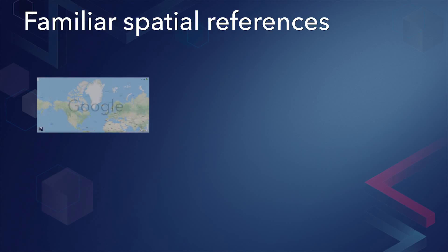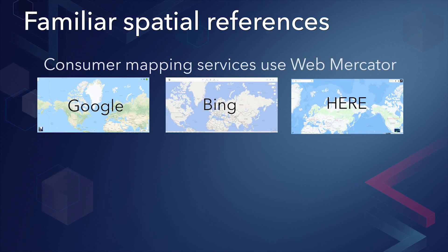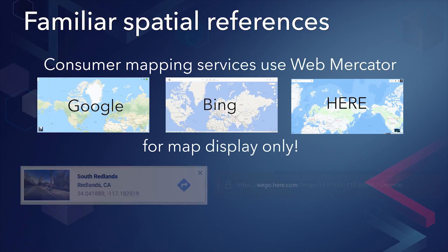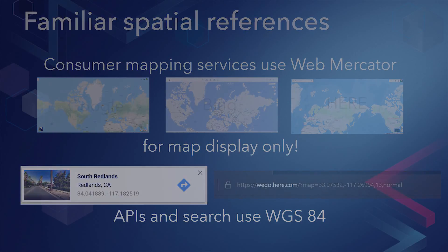If you've ever used Google, Bing, or HereMaps, you've seen examples of a Mercator projection. Although those services and APIs use Web Mercator for map display, their APIs and search tools use WGS84 coordinates. Points are projected from WGS84 coordinates into projected coordinates automatically. I wanted to point that out because it is a bit confusing — the coordinate system used at the API level is different from that used to display the map.